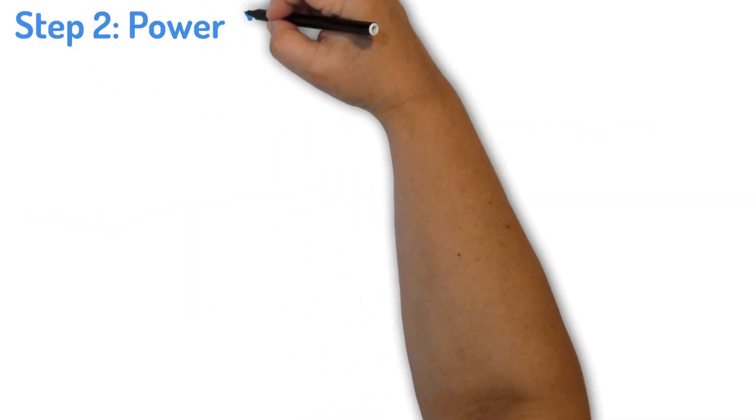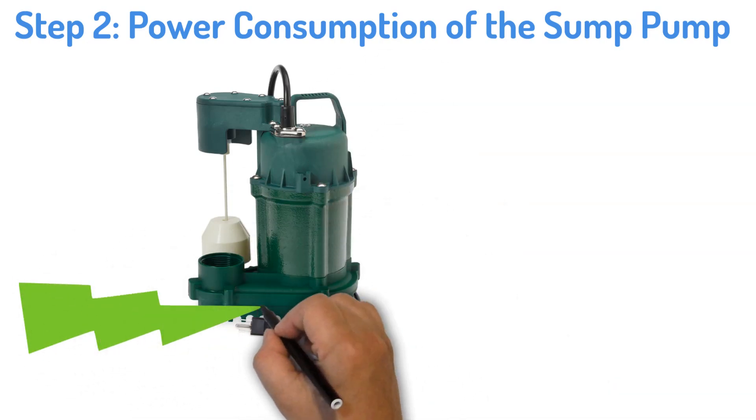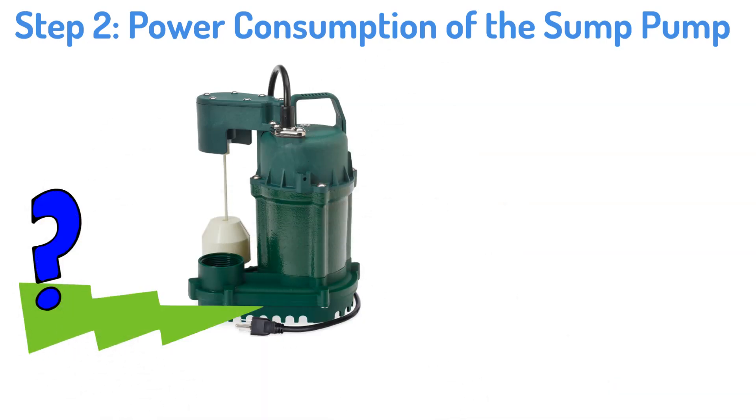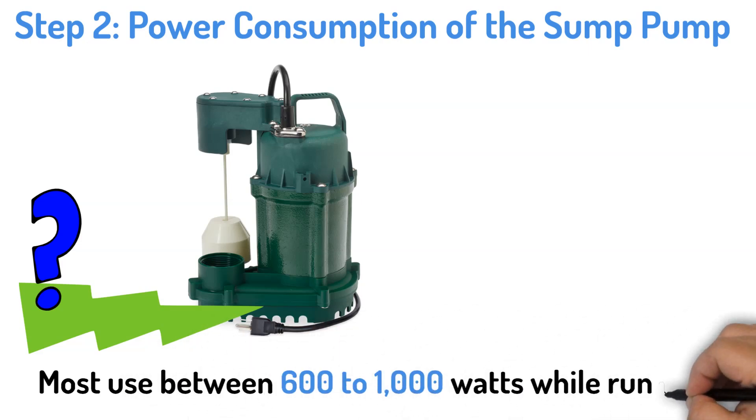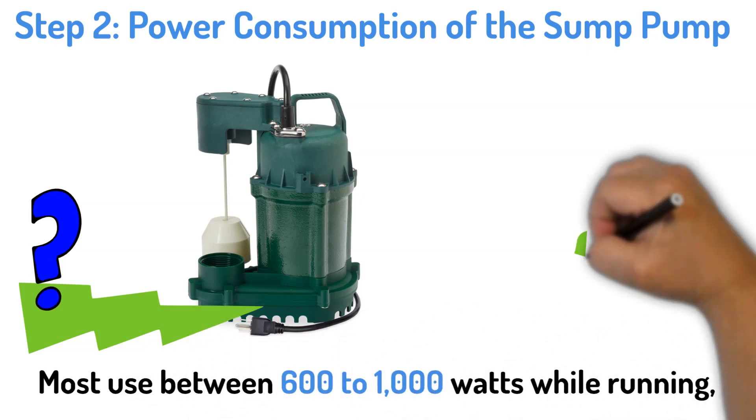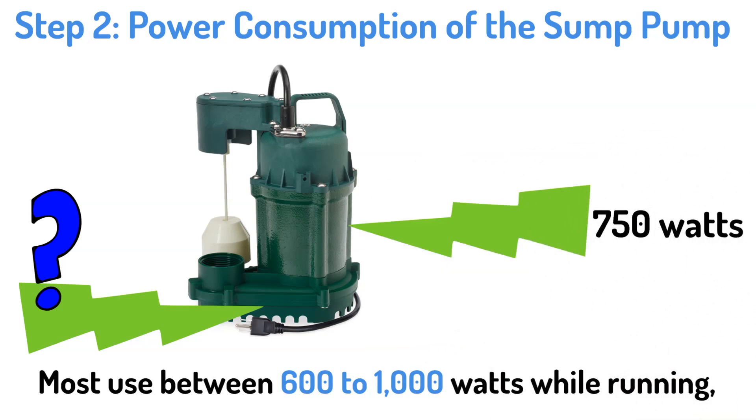Step two, power consumption of the sump pump. Next, we need to know how much power the sump pump consumes. Most sump pumps use between 600 to 1,000 watts while running. But for this example, let's assume we're dealing with an average sump pump that uses 750 watts.